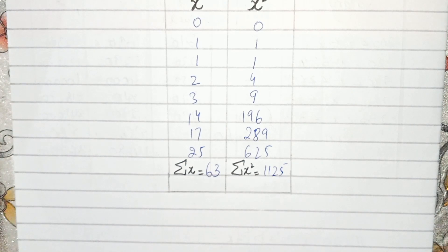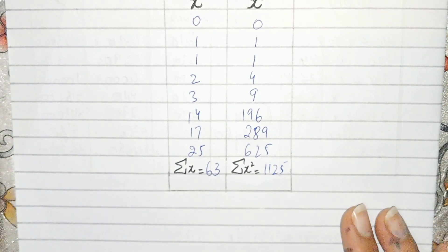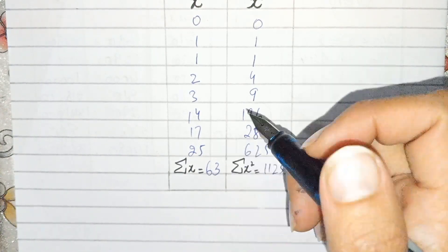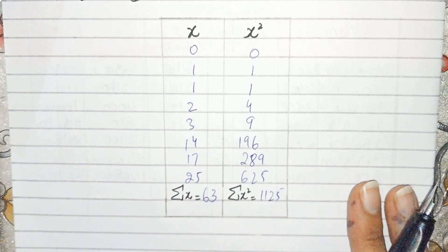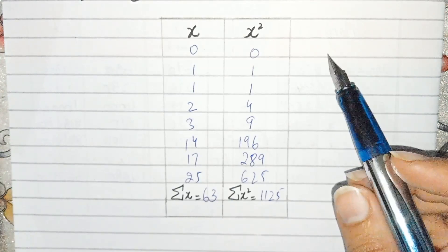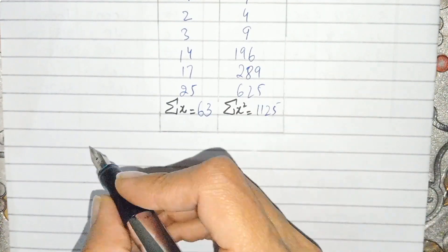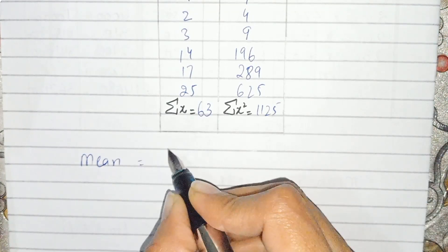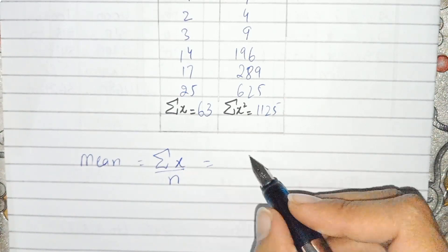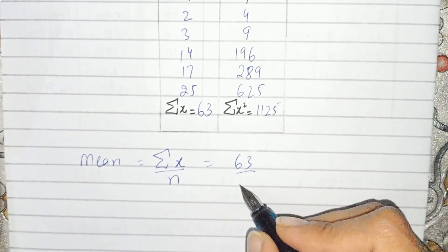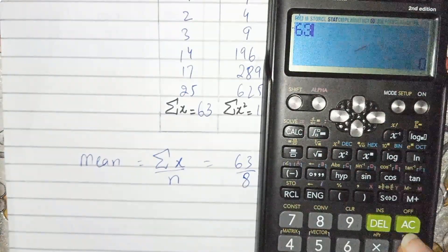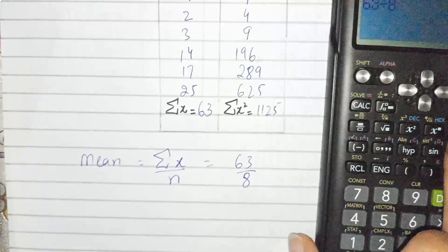This is ungrouped data, so we use the formulas for x and x² directly — no fx or fx² needed. The formula for mean is sum of x over n. The sum of x is 63 and n is 8, so 63 ÷ 8 = 7.875.